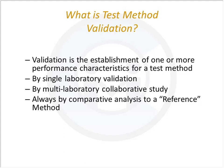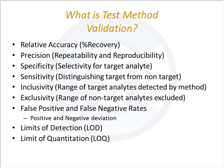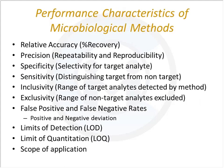When we talk about whether a method works, we're talking about performance characteristics. There are a number of performance characteristics applicable to microbiological methods, and many are also applicable to chemistry methods. First, we talk about relative accuracy or percent recovery — how much was there and how much should we get out. Then we talk about precision.